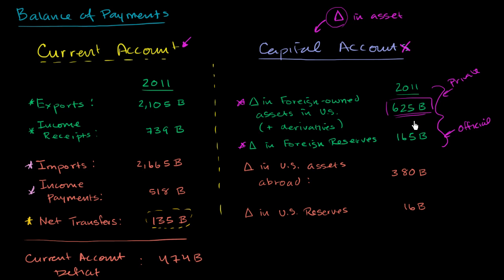For example, if someone in England were to come into the US and buy a share of IBM from an American, that would increase the private ownership number. But if the central bank of China decided to buy a US government bond from an American, then the official reserves number would increase. But they're both the same general idea: someone buys an asset — we're not talking about the income on the asset, we're talking about the asset itself — and it changes hands from an American national to a foreign national, so those foreign nationals would have to make a payment into the US. These are inflows.